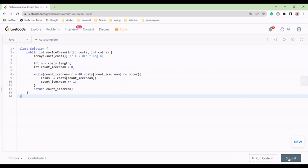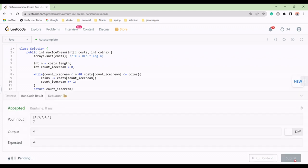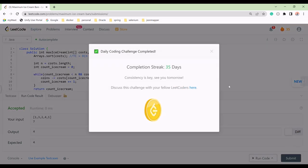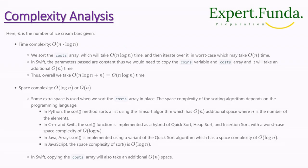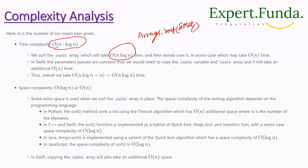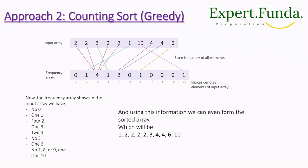Let's submit this code — it's working fine. For time complexity, sorting the array with Arrays.sort takes O(n log n). For space complexity, in Java the sort takes O(log n), while in other languages it may take O(n).